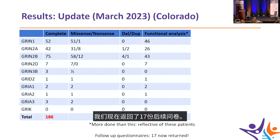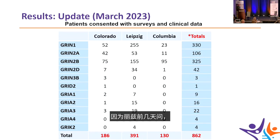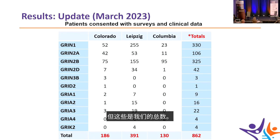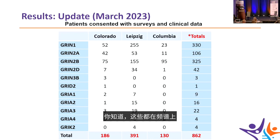Seventeen follow-up questionnaires have been returned. Combined with Johannes's strong recruitment, the totals across collaborating sites are now considered sufficient — particularly for GRIN1 and GRIN2B — to begin comparing symptom profiles with gain and loss of function classifications.